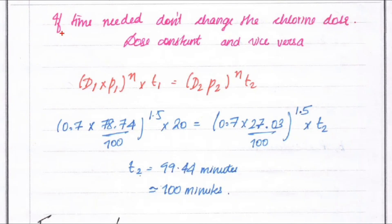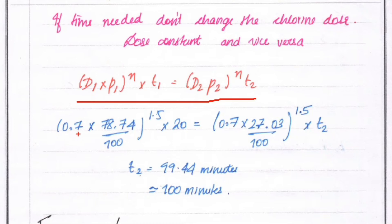Next, we find the time of contact. If we do not change the chlorine dosage (dosage constraint), we use the formula: (D1 × P1)^N × T1 = (D2 × P2)^N × T2. Here D1 = D2 = 0.7 (same dosage), P1 = 78.74/100, P2 = 27.03/100, N = 1.5, and T1 = 20 minutes. We need to find T2.